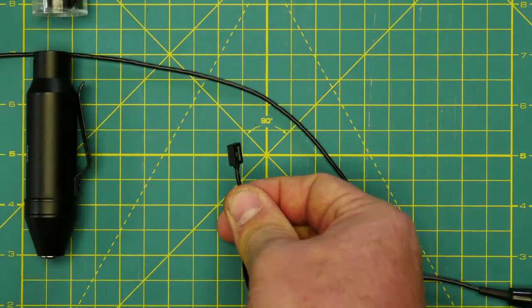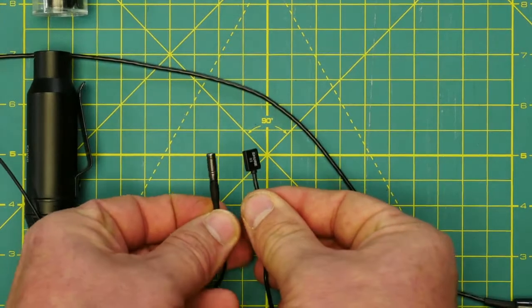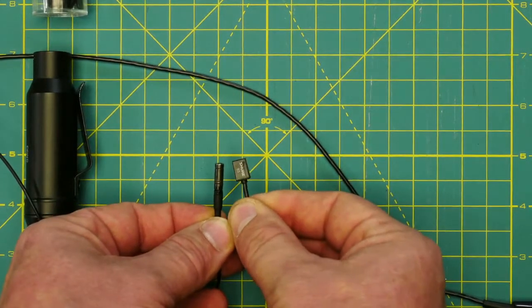For comparison's sake, let's look at the Rode Lavalier. They're both small enough to hide under your clothes.